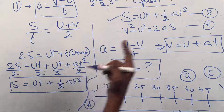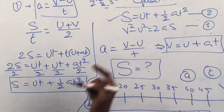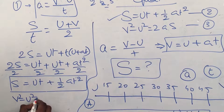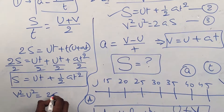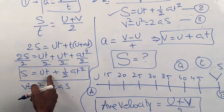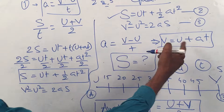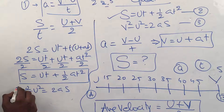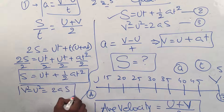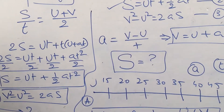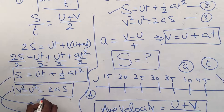Using the first and second equations together and eliminating t by substituting t = (v - u) / a, we arrive at the third equation: v² - u² = 2as.